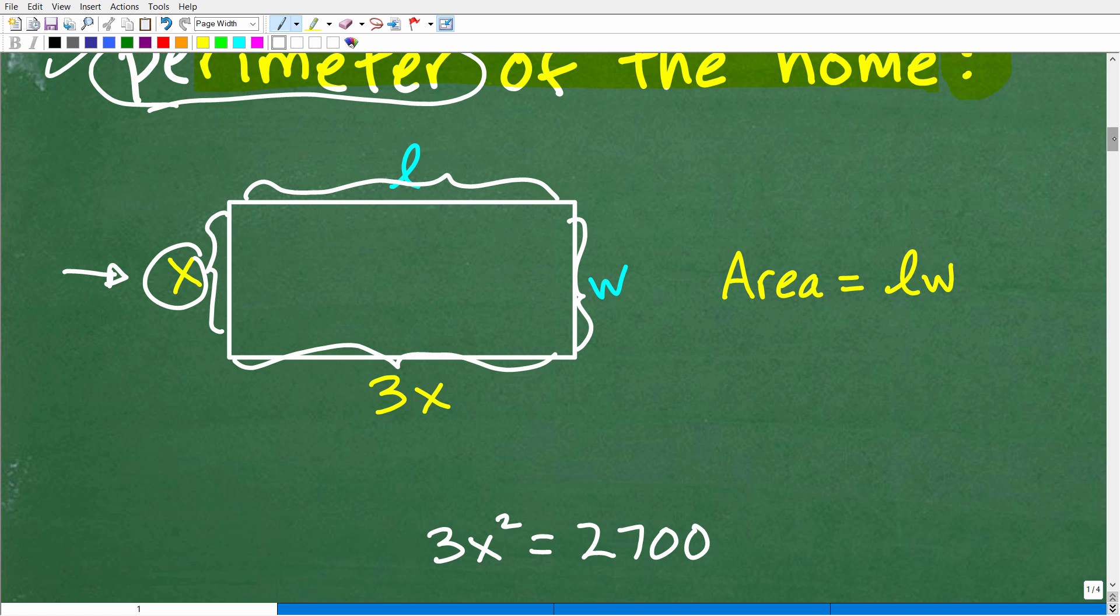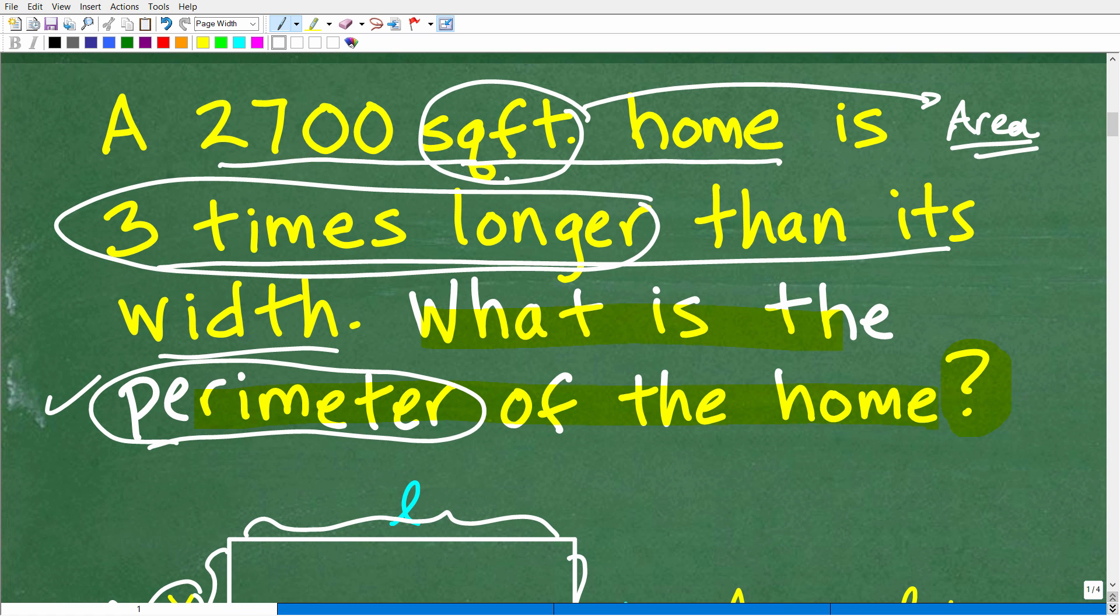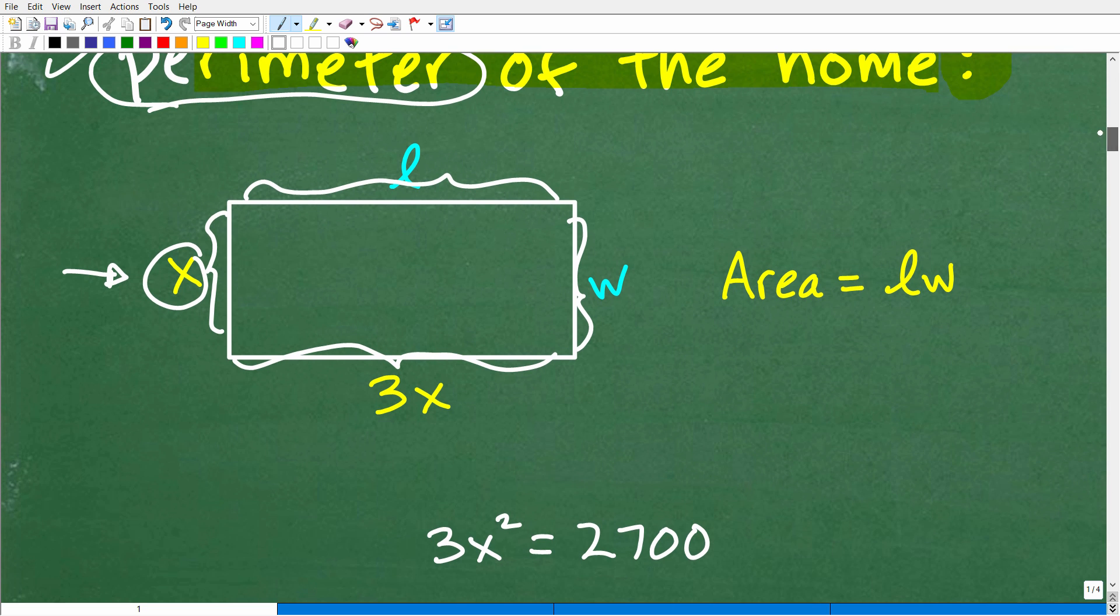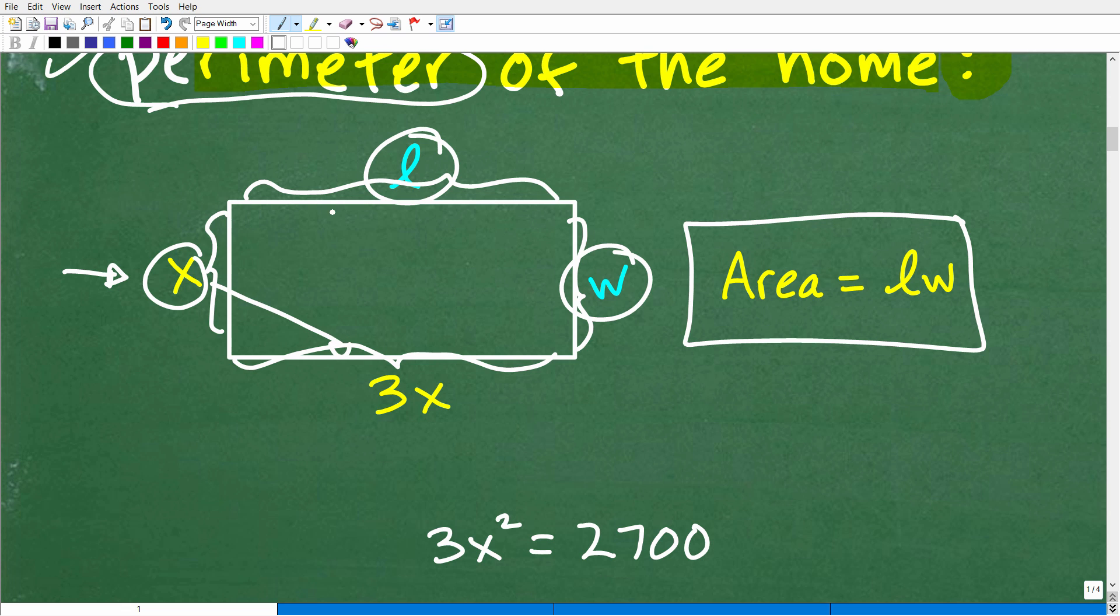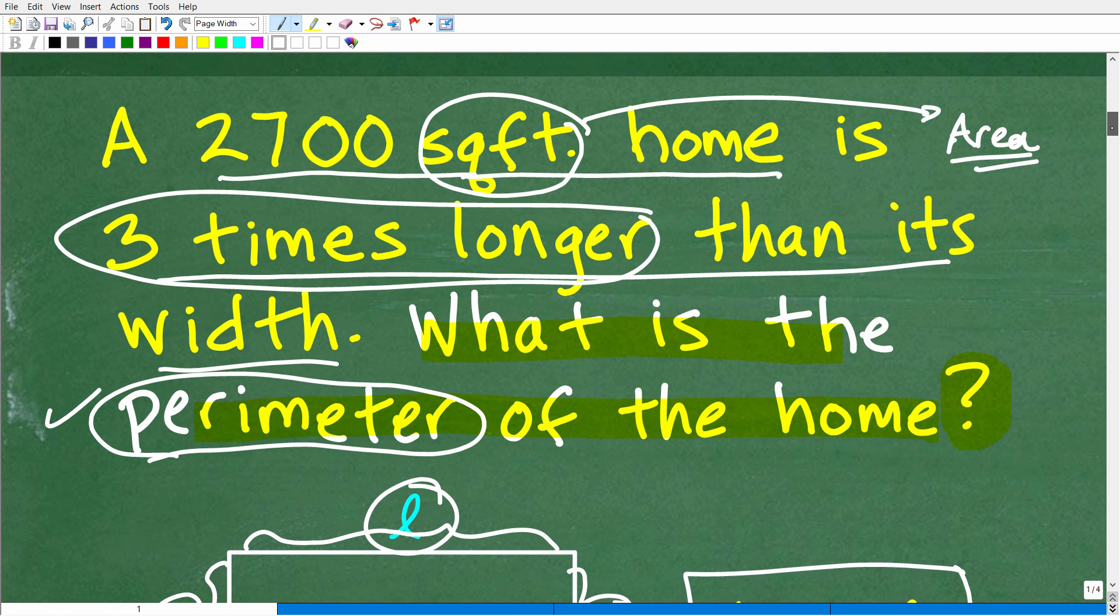And then the second thing you need is a realization that we are dealing with area here. Square foot is a unit of measure for area. So we need to know the area of a rectangle and area of a rectangle is length times width. So here's the length. Here's the width. That would give us the area. So in this particular sketch here, the area would be X times three X. Of course, this represents this rectangular home, but we know that the area is equal to 2,700 square feet.